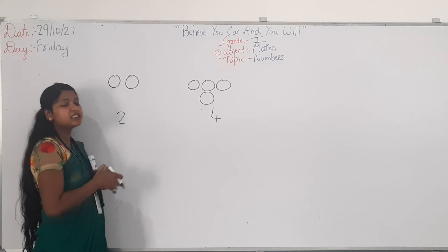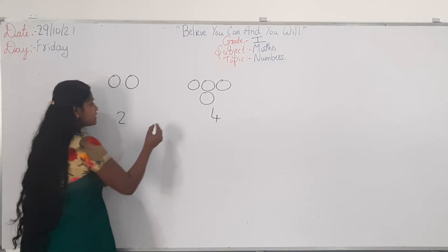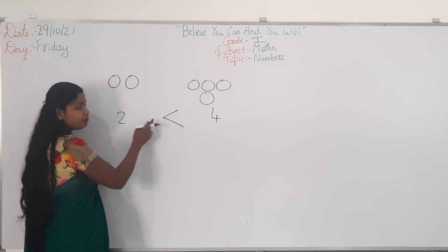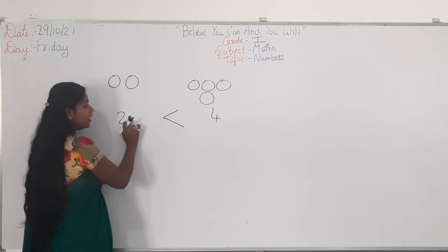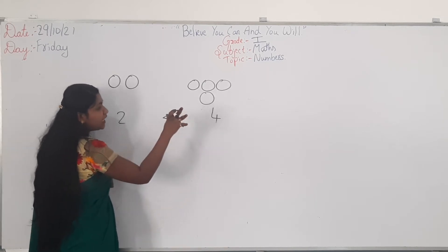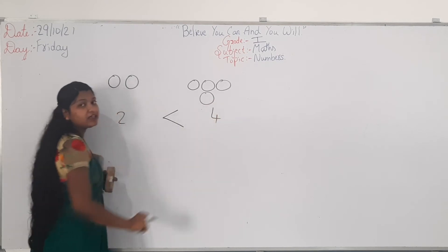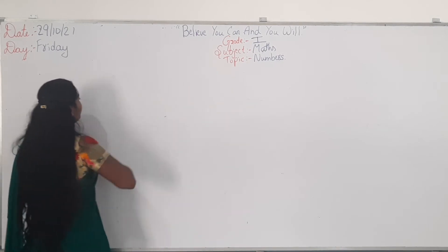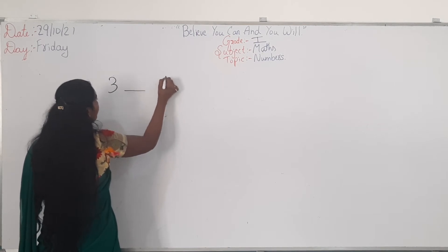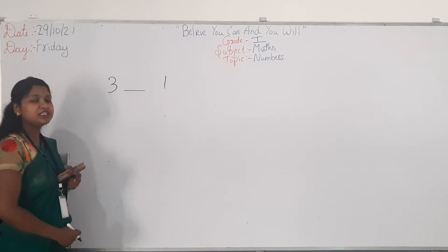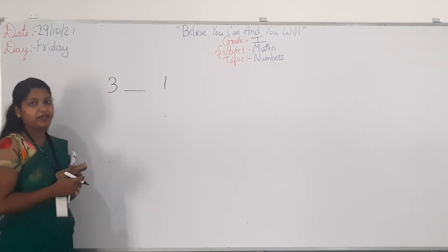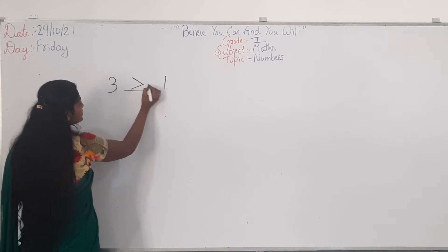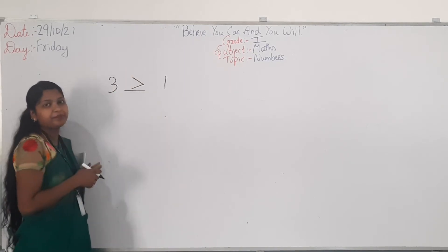How do we indicate that two is less than four? You have symbols, right? So, this is the symbol for less than. This pointer indicates that the number is less, and the wider portion means that is the greater number. For example, 3 blank 1 — one is smaller and three is greater, so the sign will be pointing this side. The pointer indicates less than and the wider opening means greater.